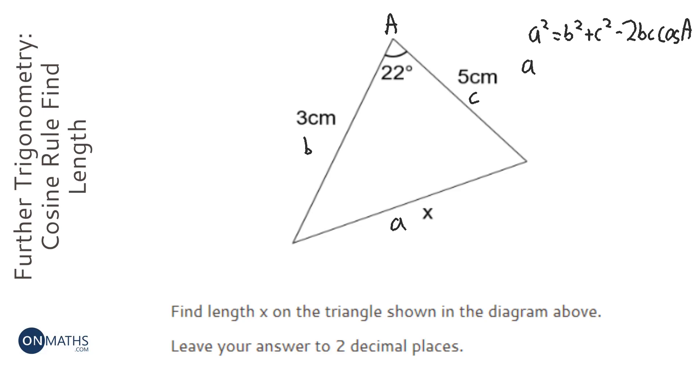So let's fill in what we've got. We've called b three, so three squared plus five squared minus 2 times 3 times 5 cos 22. Let's type that in: three squared plus five squared minus 2 times 3 times 5 times cos 22.